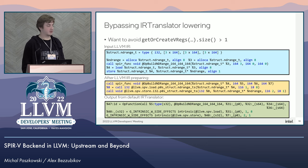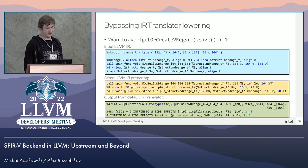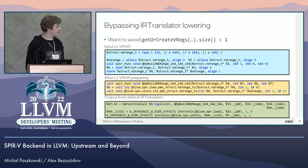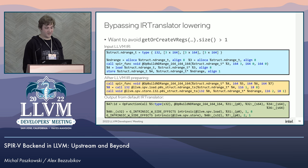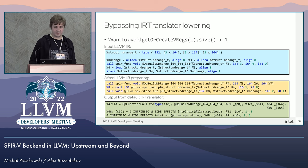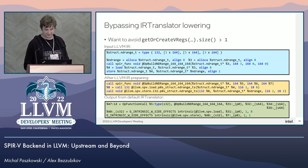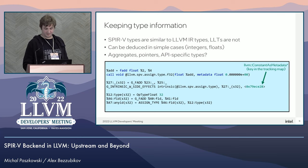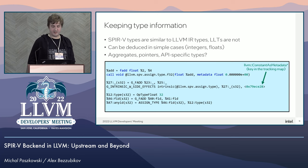We solved this by introducing some target-specific intrinsics which obviously do not undergo the heavy lowering of the ISEL translator. Here you can see the original IR after pre-processing where we actually inserted these intrinsics, and how the MIR looks after ISEL translation, where we essentially still have pretty much the same code.